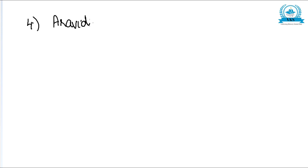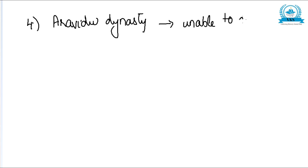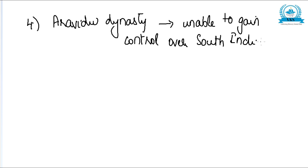The fourth result was that the Aravidu dynasty, to which Aliyah Ramaraya belonged, was unable to gain control over South India because they were completely defeated in the battle.